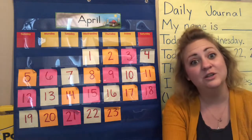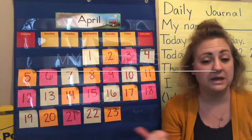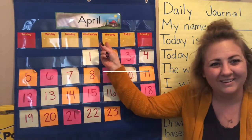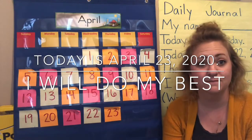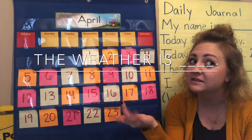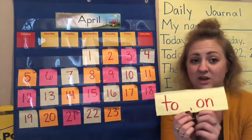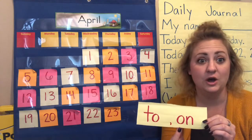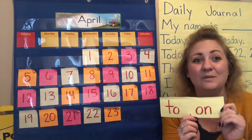What I want you to do right now is we're going to do our daily journal. I have it for you in the description. You know what to do by now. You're going to write: My name is... Today is Thursday, April 23rd, 2020. I will do my best. The weather is... You're going to look outside and tell me what the weather's like. And today your high-frequency words that you're going to make into a sentence are the words "to" — T-O — and "on" — O-N. You're going to use these two words to create a sentence and draw a picture.